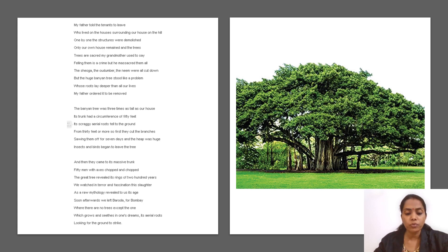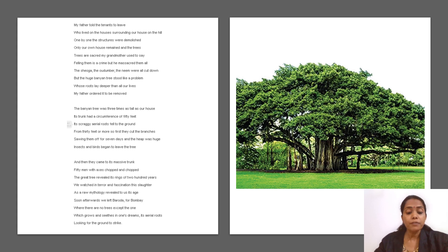My father ordered it to be removed. The banyan tree was three times as tall as our house. Its trunk had a circumference of 50 feet. Its scraggly aerial roots fell to the ground from 30 feet or more. So first they cut the branches, sawing them off for seven days, and the heap was huge. Insects and birds began to leave the tree. And then they came to its massive trunk — 50 men with axes chopped and chopped. The great tree revealed its rings of 200 years. We watched in terror and fascination the slaughter, as a raw mythology revealed to us its age.